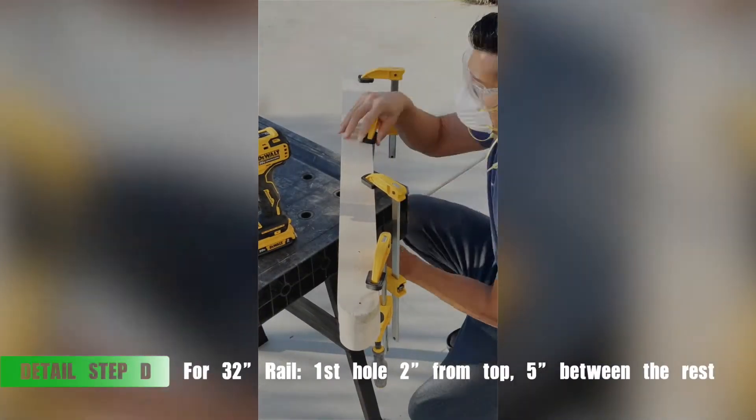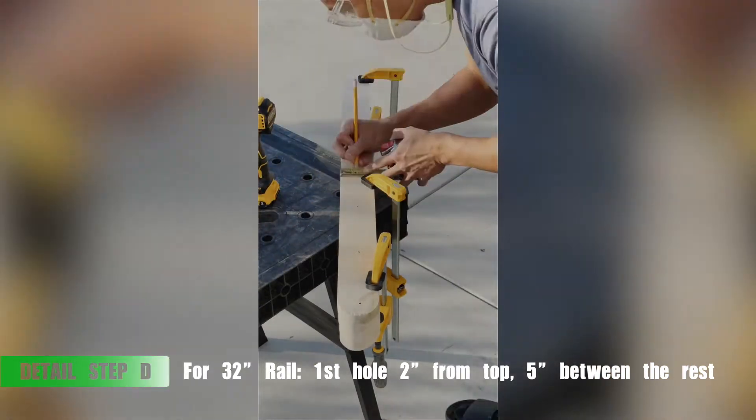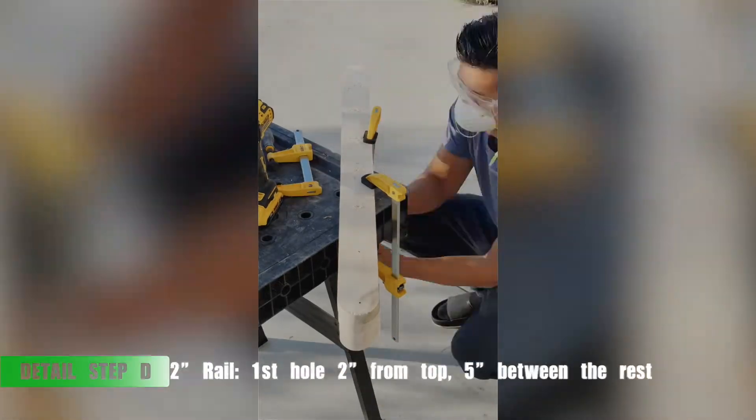For the shorter 32 inch rail, you're going to actually start with the hole 2 inches from the top and then have each hole subsequently 5 inches and a quarter from each other.